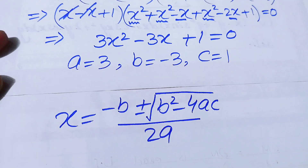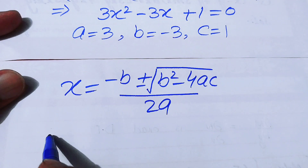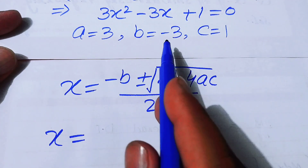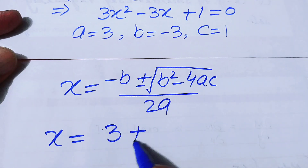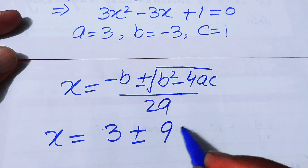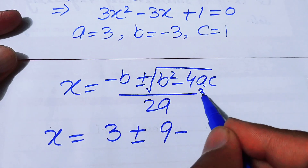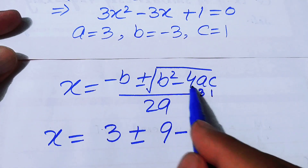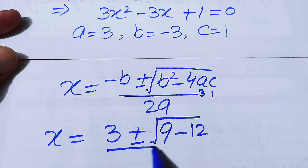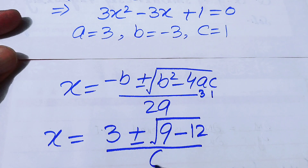Applying the quadratic formula x = (−b ± √(b²−4ac)) / (2a): the value of −b is plus 3, b² is 9, and 4ac equals 4 times 3 times 1 which is 12. The denominator is 2 times 3, which is 6.